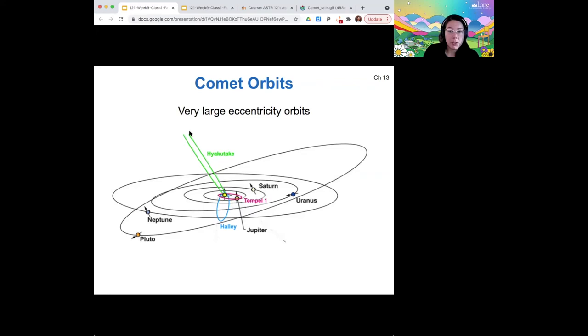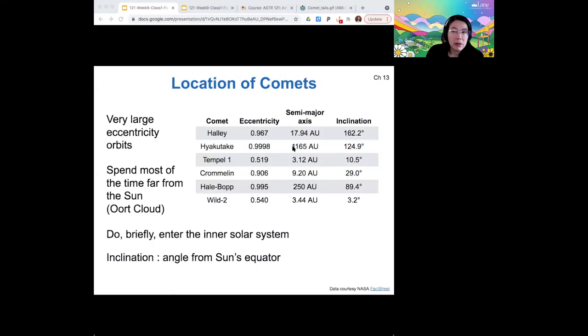So all comets share the feature that they come very close to the sun for a very short period of time, but they spend most of their time in locations far from the sun. And when we look at all of their eccentricities and semi-major axes and inclinations, these are all relatively large semi-major axes. Temple 1 is like within the asteroid belt based on its semi-major axis. And you can see like comet Halley and comet Hayakutake, they have extremely high eccentricities. And because of those very high eccentricities, most of the time is very far from the sun.